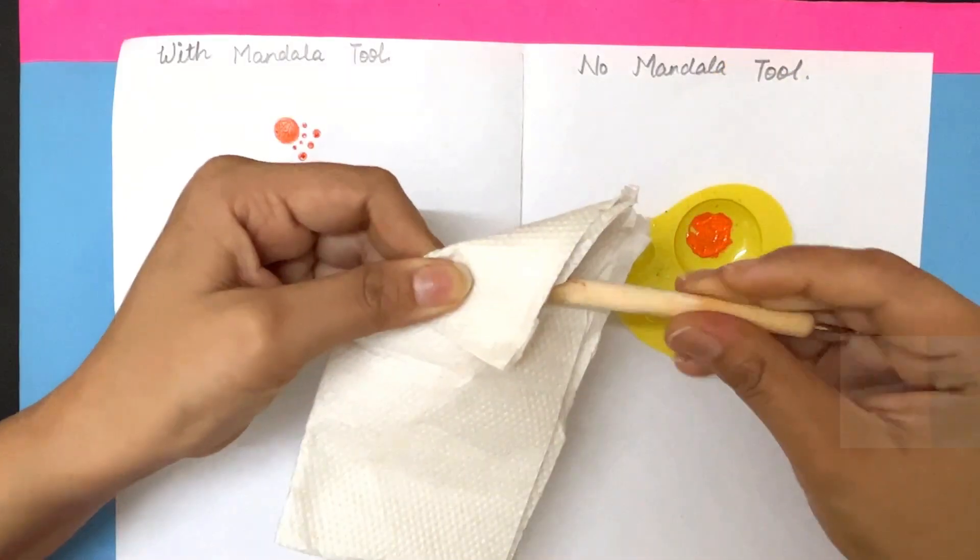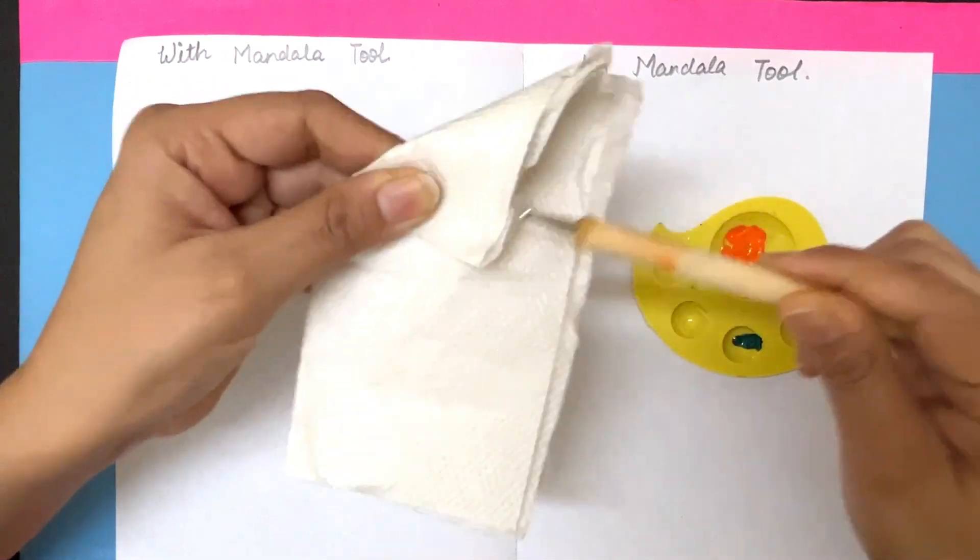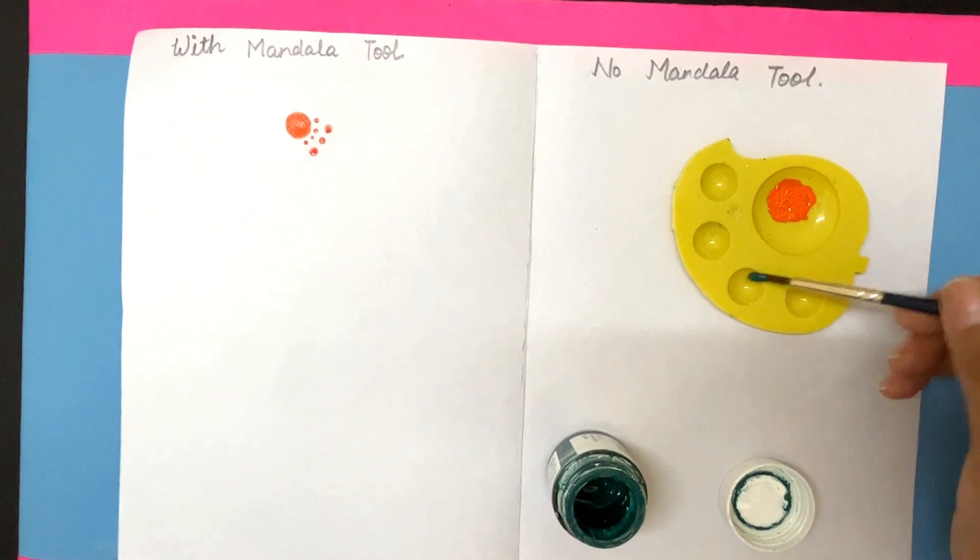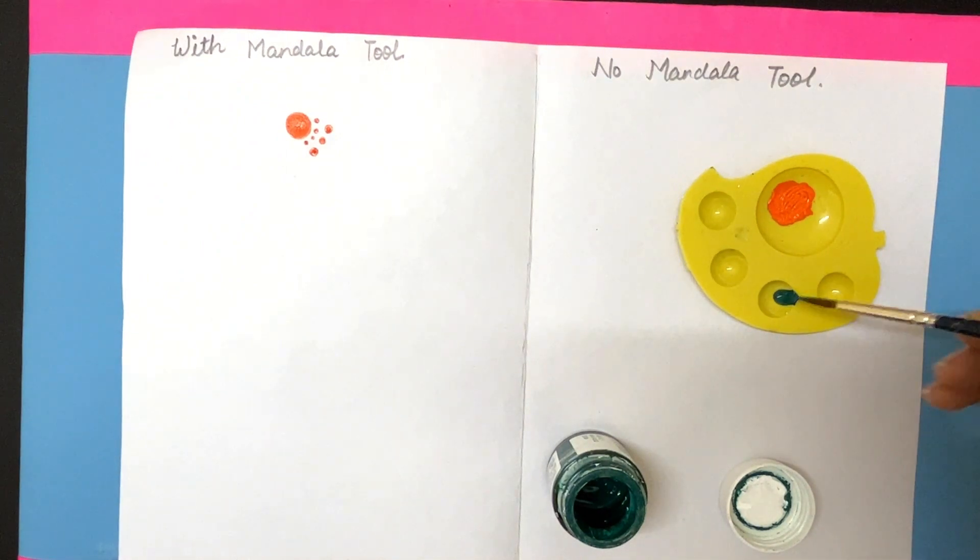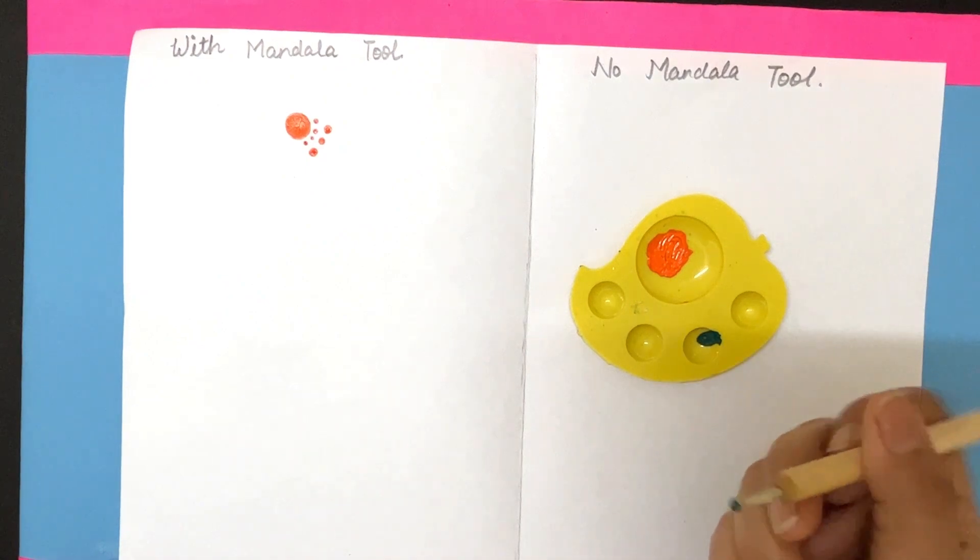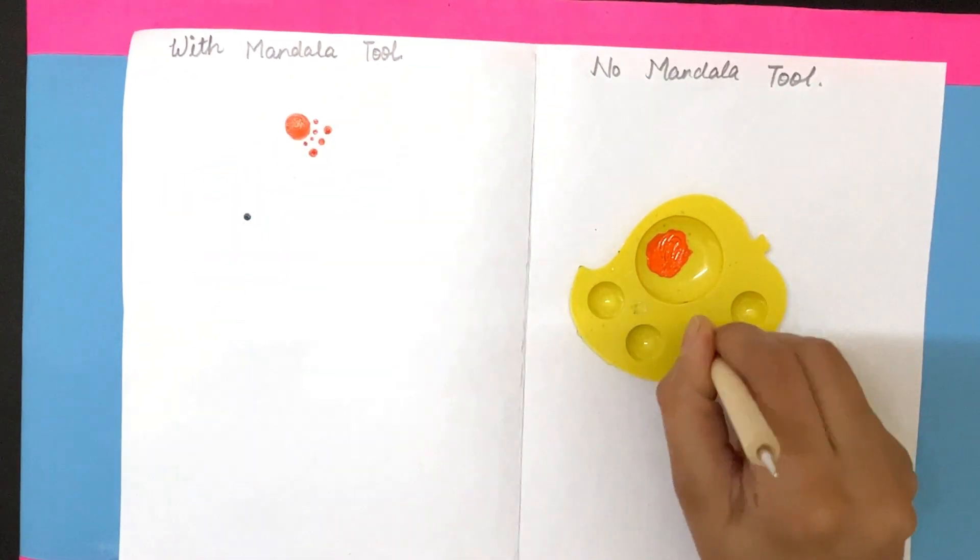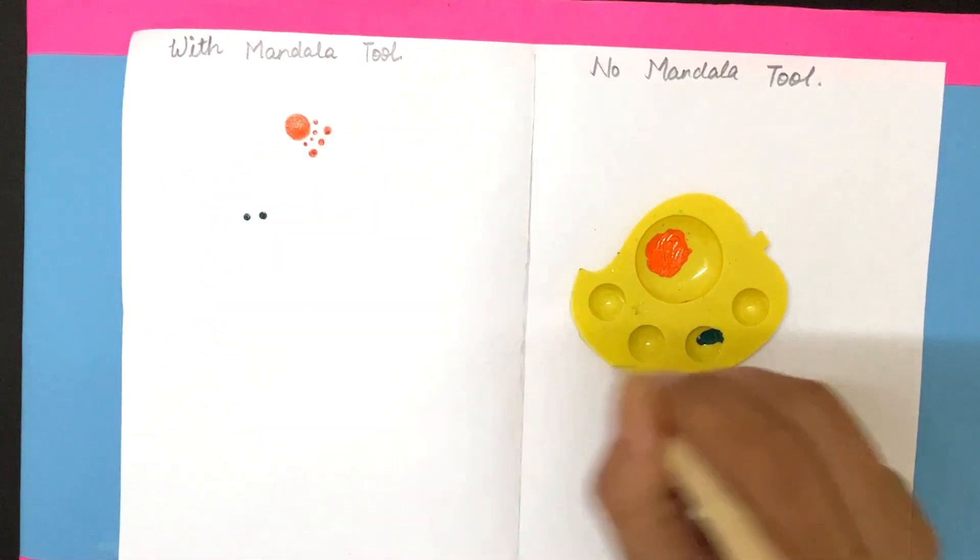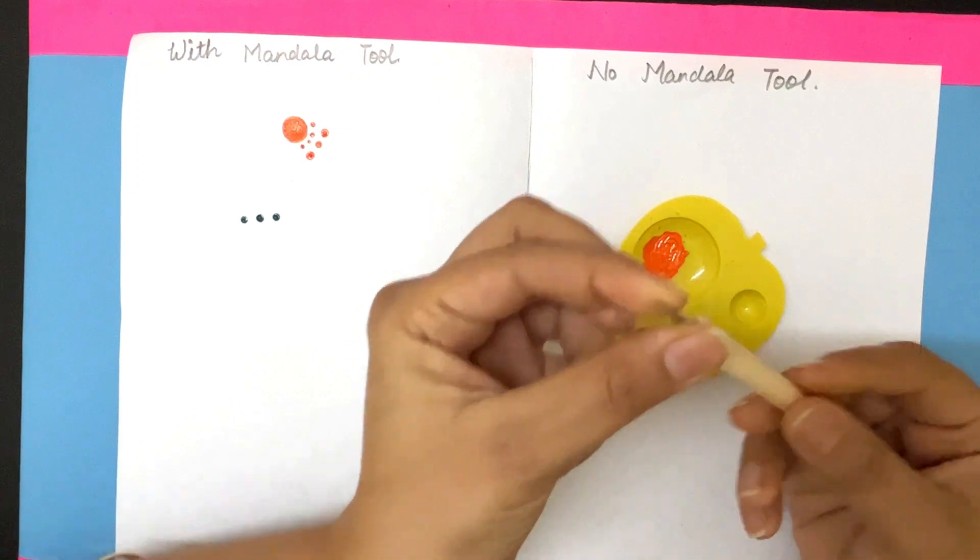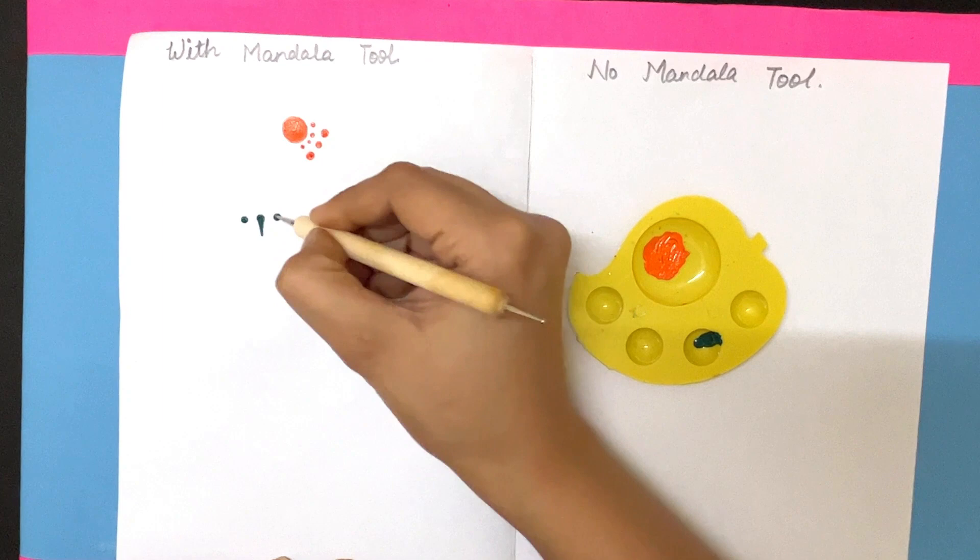Remember to clean your tool with a tissue after using it for some time to ensure even dots. Now, let's see the technique of creating leaves. First, create the dots correctly and then shape them into leaf using a pointed tool. Make the tail of your dot and then shape it to form a leaf.